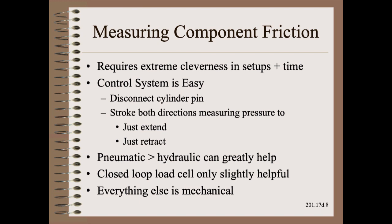If we decide to redesign, we need to know how much friction is coming from each of the many elements in the mechanical control system, so that our new design addresses the worst ones. The control system contribution is the easiest to find. Simply disconnect the cylinder pin and stroke the piston in both directions, while measuring the pressure required to just extend and then to just retract. Some of this uncertainty is regulator or E-to-P hysteresis, which can be found in the valve performance specs or by direct measurement. The bulk of the rest is the piston seal. Going from pneumatic to hydraulic can greatly help in these component frictions.